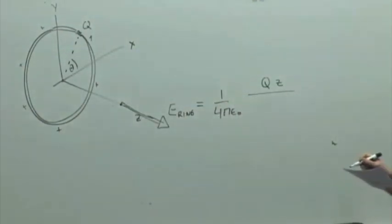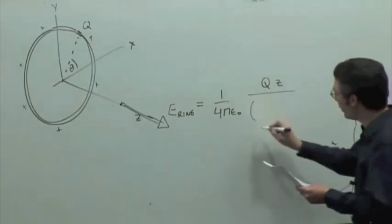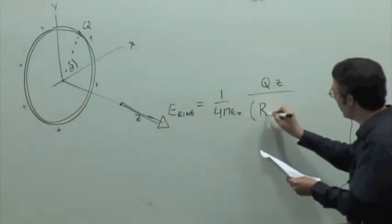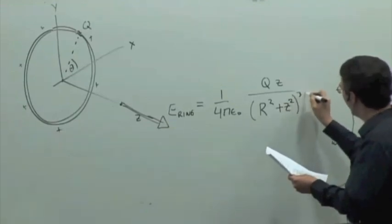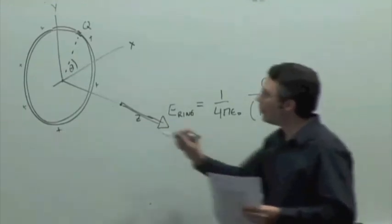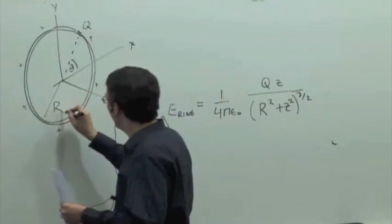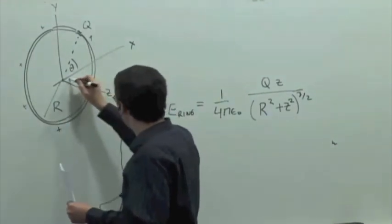1 over 4 pi epsilon 0, Q times z over r squared plus z squared to the three halves, where capital R is the radius of the ring, and z is the distance away from the center.